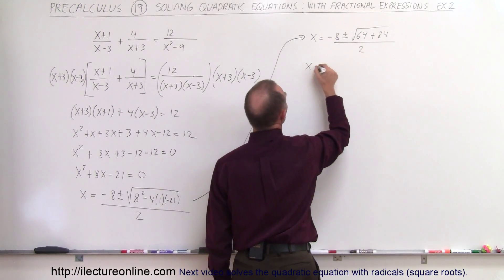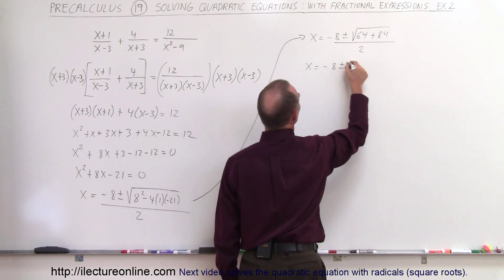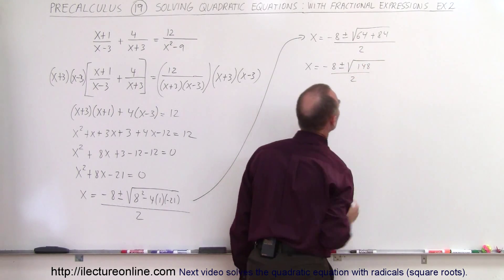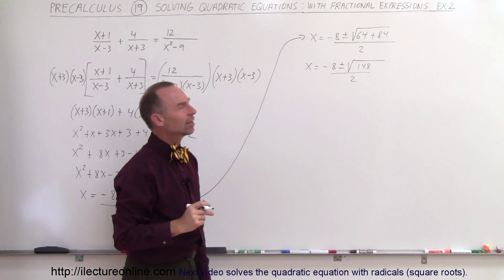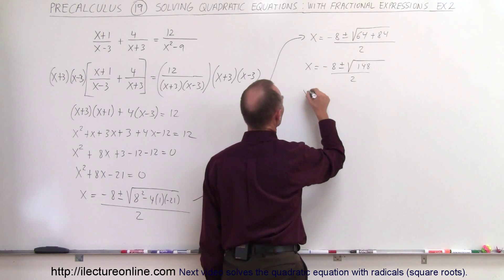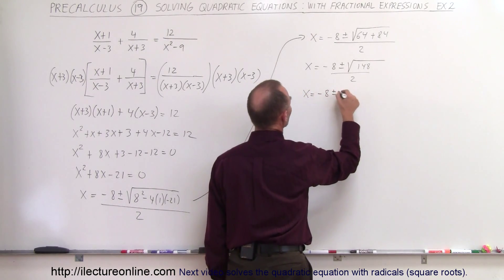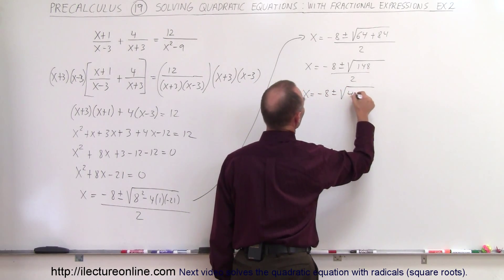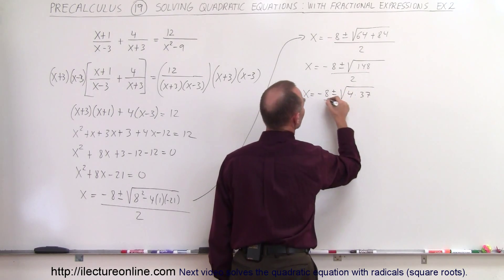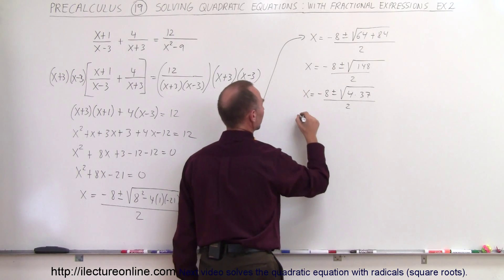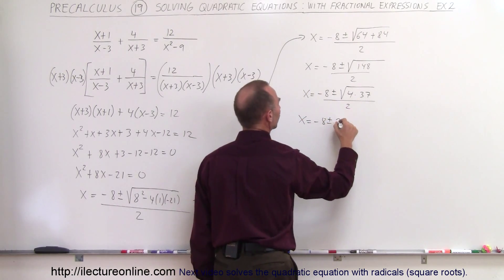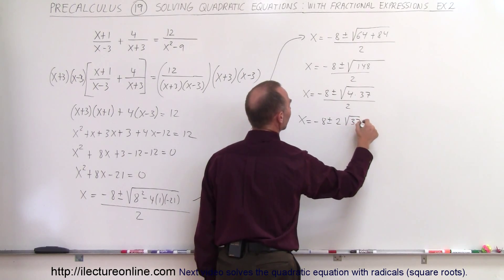Continuing. x equals minus 8 plus or minus the square root of, that would be 148, divided by 2. And that is divisible by 4, so we can write this as x is equal to minus 8 plus or minus the square root of 4 times 37, because that's 74 times 2 is 148, divided by 2. So x is equal to minus 8 plus or minus, take the square root of that, we get 2 times the square root of 37, divided by 2.